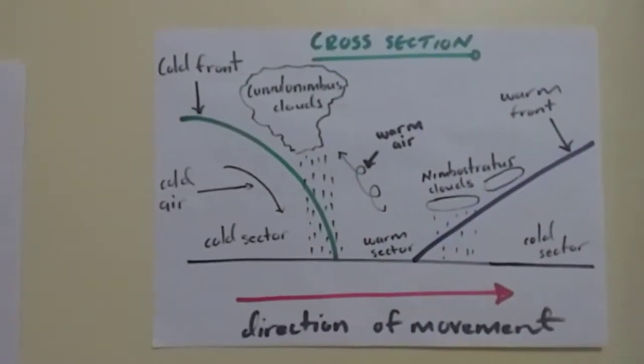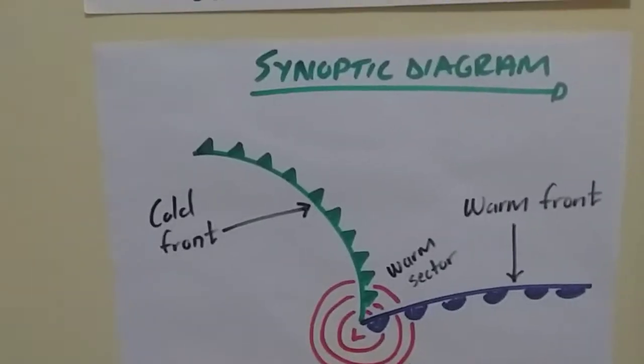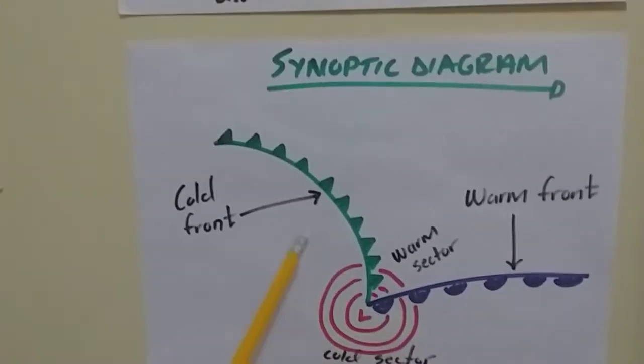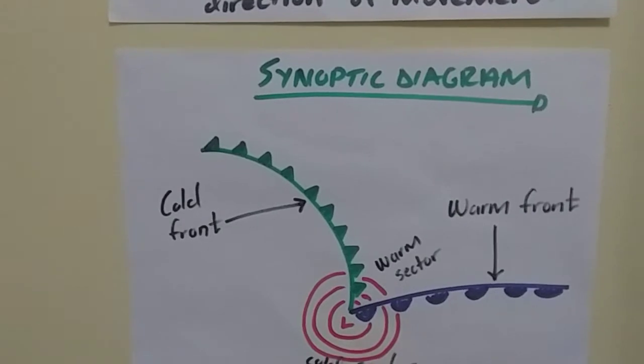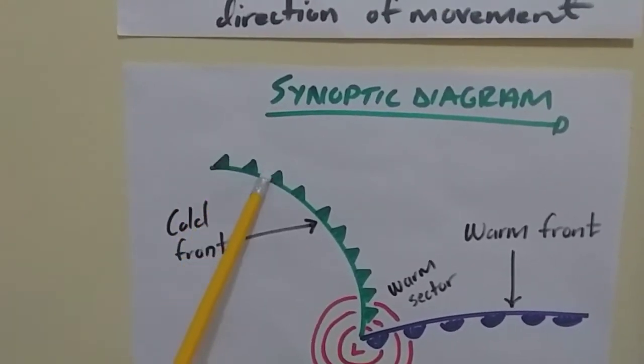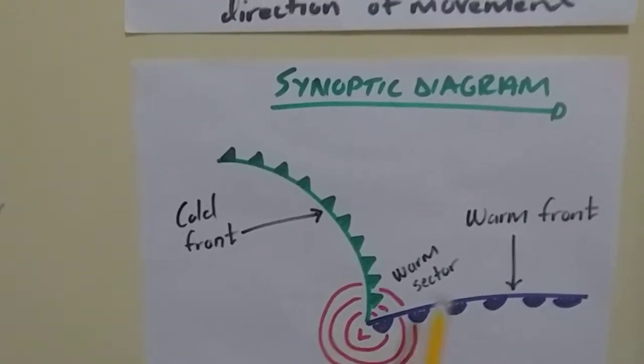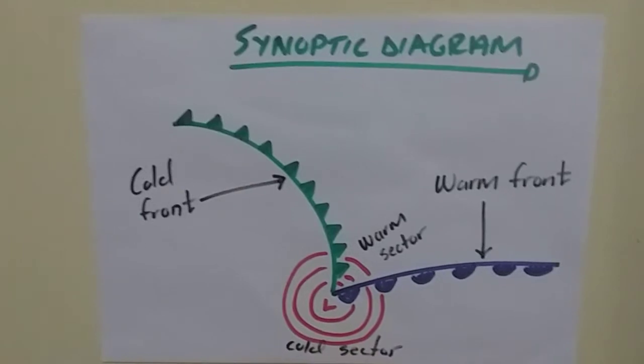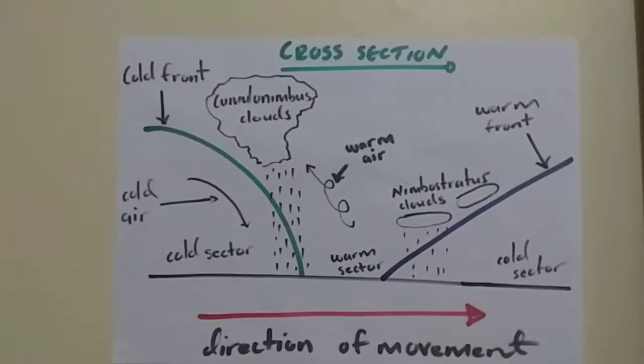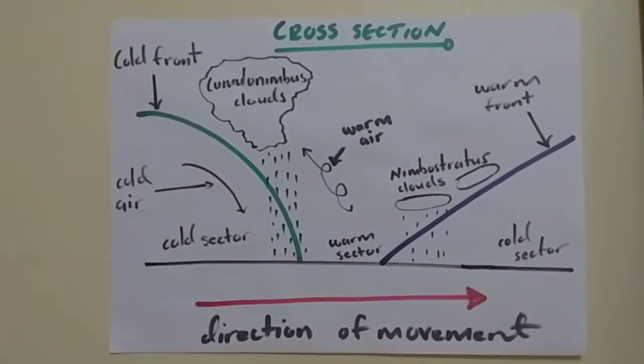And then, we have how to draw a cross-section and a synoptic diagram. So, the synoptic diagram is this one, the one that we usually see where you have a cold front that has the spikes and all that, and then the V-shaped on the mature stage. And then, the cross-section is the one that usually comes because we don't usually see it in the question papers.